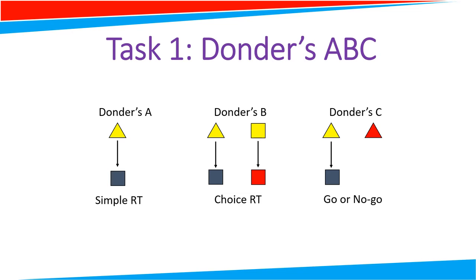Therefore, each of those different variants of reaction time will yield different reaction times themselves, so A will be faster than C, which will be faster than B.